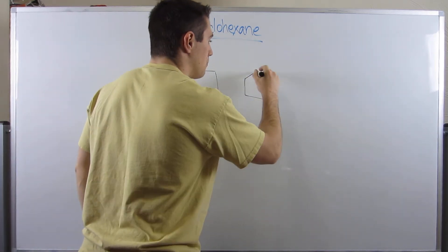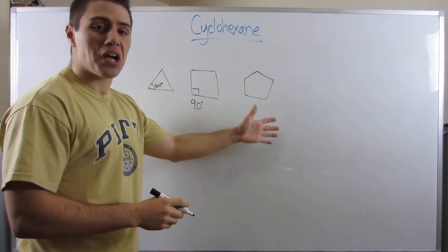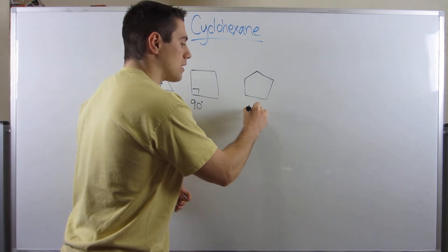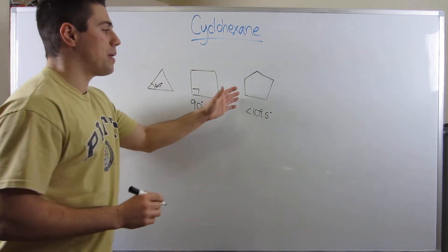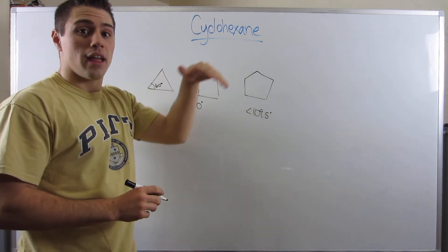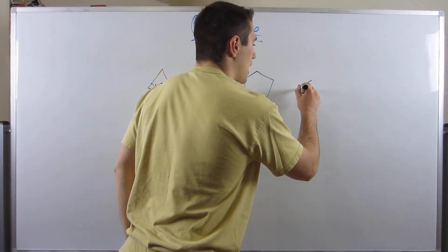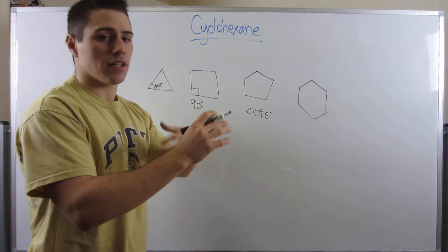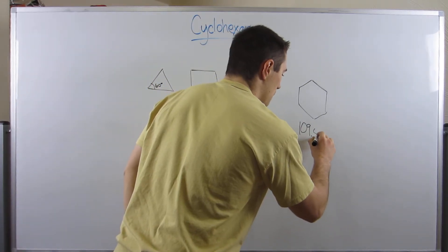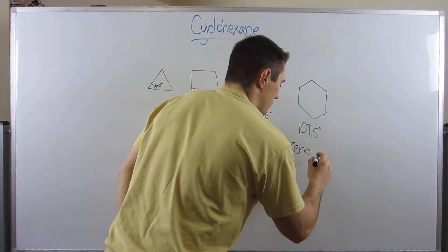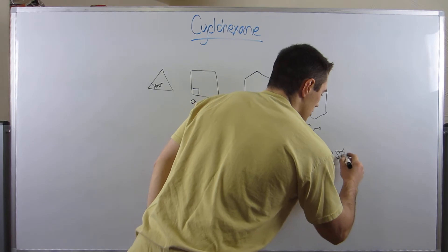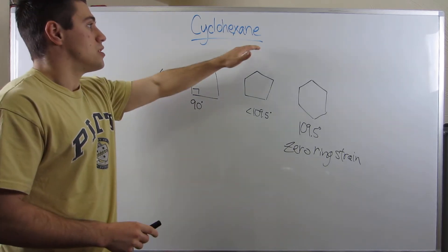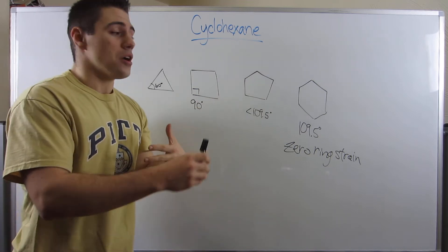Now let's look at cyclopentane. Cyclopentane is common — you see it all the time. There's some ring strain associated with it because the bond angles are a little less than 109.5, but we can live with that. However, when we get all the way over to cyclohexane, we've hit the jackpot, and this is why you see it in nature a lot. Because of the geometry of the ring and the way it can arrange itself, we hit that magic number of 109.5 degrees and we have zero ring strain.